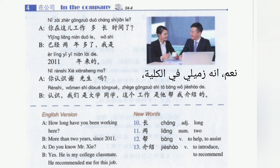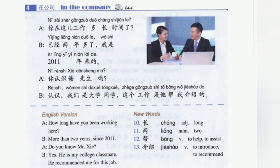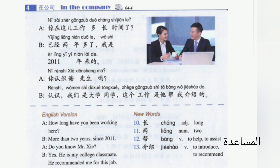认识。我们是大学同学。这个工作是他帮我介绍的。New Words: 长，两，帮，介绍。